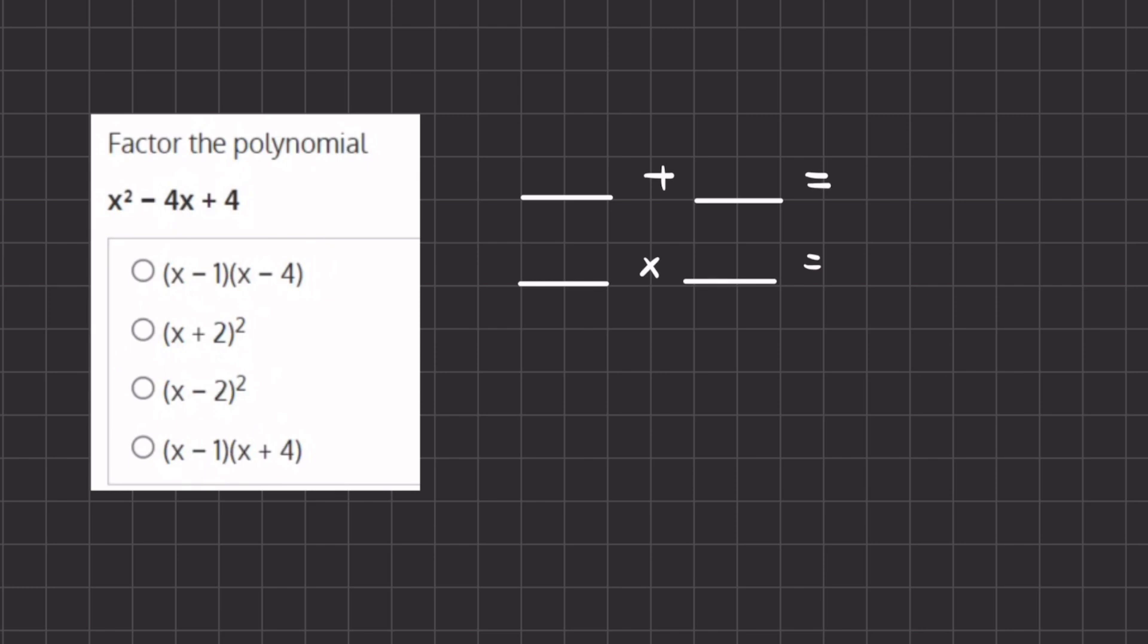Now in order to do so we want to find two numbers that add up to negative 4 and two numbers that multiply to 4. And they have to be the same two numbers.